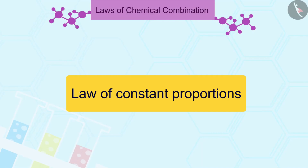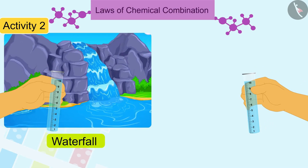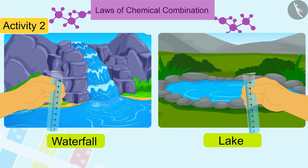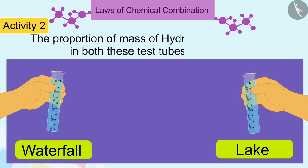Let us now take the second law of chemical combination. Law of constant proportions. Activity 2: If we take 10 ml of water from a waterfall in a test tube and 10 ml of water from a lake in another test tube, can you tell whether the proportion of mass of hydrogen and oxygen in both these test tubes is the same or not?